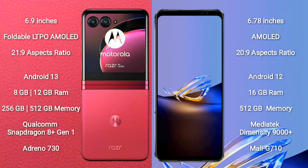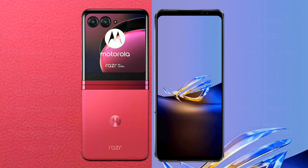Motorola RAZR 40 Ultra comes with 8GB or 12GB RAM and 256GB or 512GB internal storage, powered by a Qualcomm Snapdragon 8 Gen 1 processor with an Adreno 730 GPU. ASUS ROG Phone 6D Ultimate comes with 16GB RAM and 512GB internal storage, powered by a MediaTek Dimensity 9000 Plus processor with a Mali-G710 GPU.